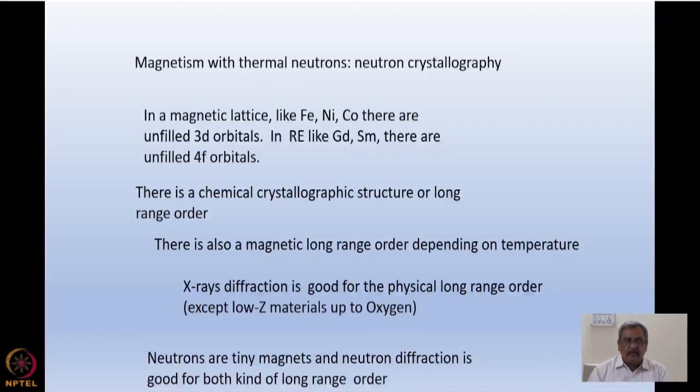So X-ray diffraction is good for the physical long range order, a crystallographic structure, because X-rays are an extremely powerful tool. In synchrotron you can have X-ray beams which are micron size and in intensity possibly at least 10^8 orders or 10^6 orders more strong than a neutron source. So X-ray diffraction is very good for finding out long range physical order or crystallographic structure in powder samples, except low-Z materials, because X-rays cannot see, we can say, up to oxygen. That means the Z values of 8, or mass number of 16.